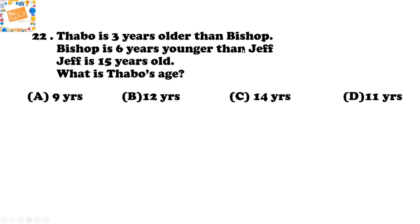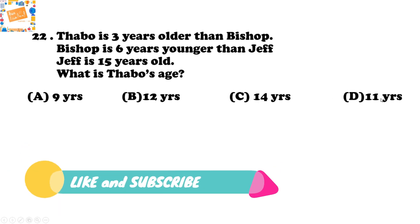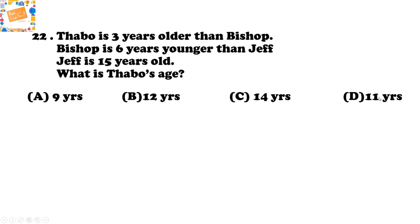Next question: Thabo is three years older than Bishop. Bishop is six years younger than Jeff. Jeff is 15 years old. What is Thabo's age? Options are: A) 9 years, B) 12 years, C) 14 years, or D) 11 years. Think about this carefully and then attempt it.